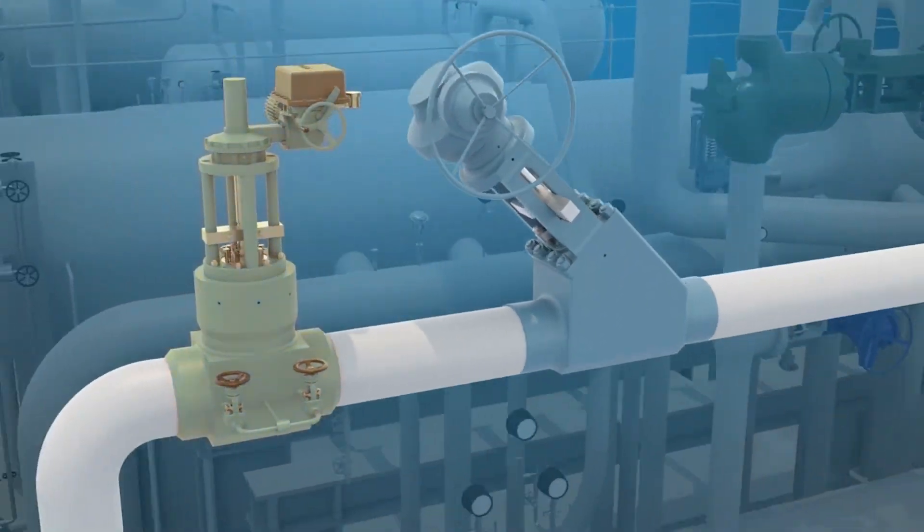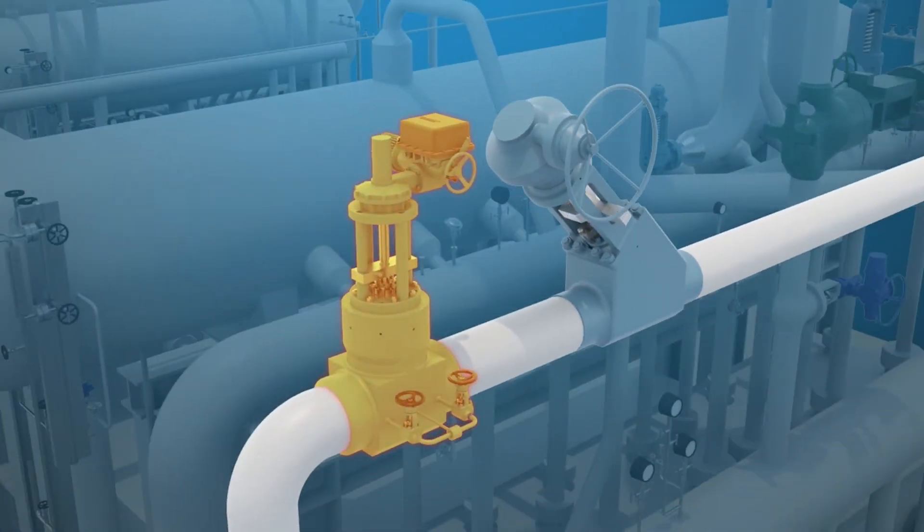The main steam stop valve's primary function is to ensure tight, bi-directional shutoff to the main steam line and is required by boiler code.